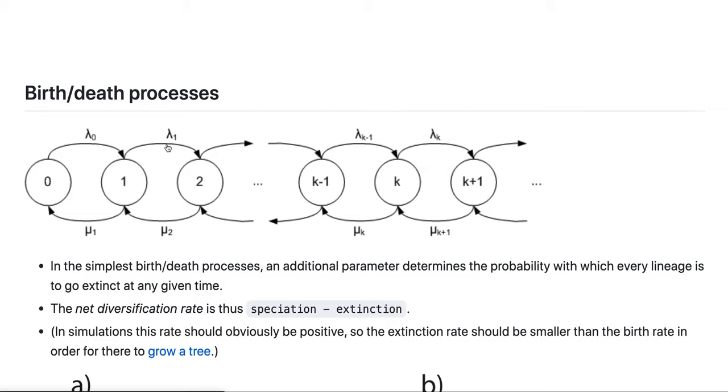So what we then get in terms of diversification is that we now have to basically calculate the net diversification rate. So that is the speciation, the births, minus the extinction. So for example, where you then simulate trees, maybe because those need to be proposed in a Bayesian run.